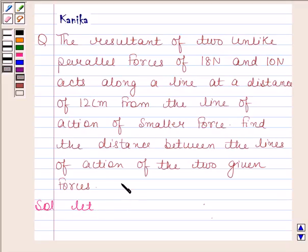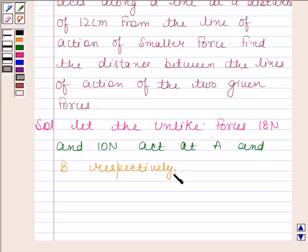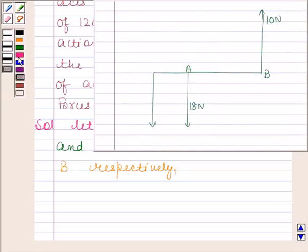Let the unlike forces, 18 Newton and 10 Newton act at A and B respectively. And let C be the point through which the resultant passes.